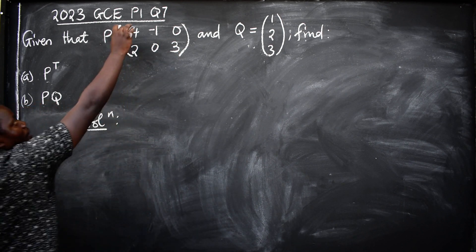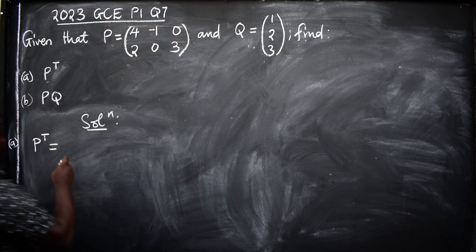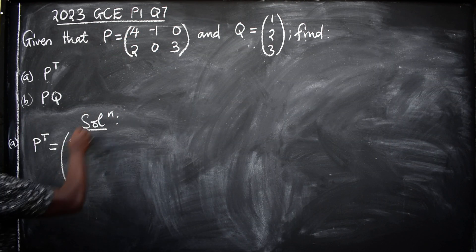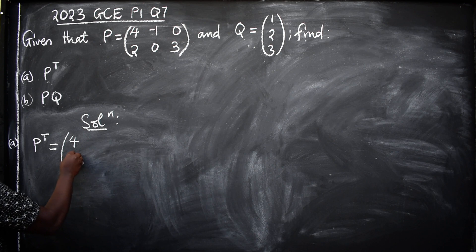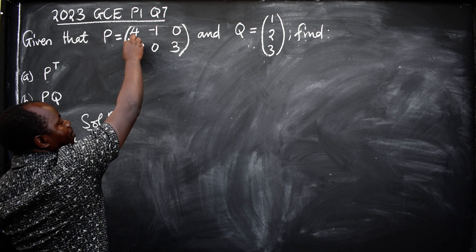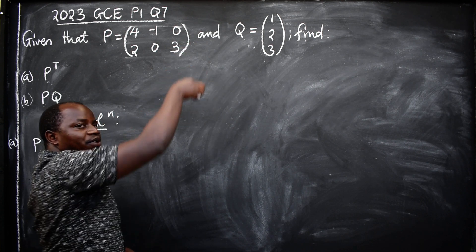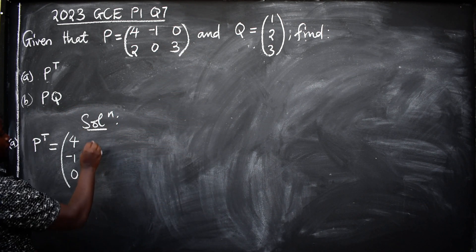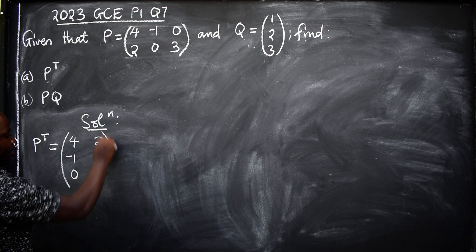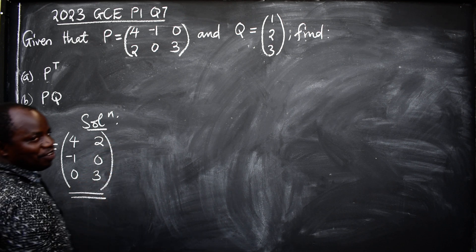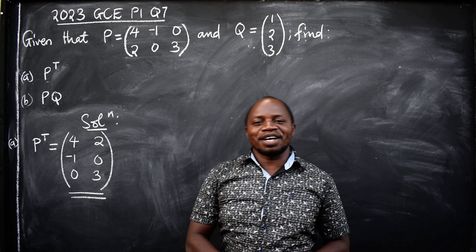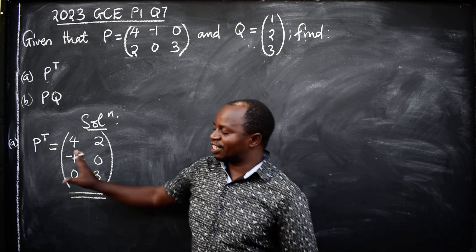So we are going to interchange. This first row will become first column. So our first row will now be the first column: 4, -1, 0. And then our second row will become second column: 2, 0, 3. Like this, you have transposed the matrix just like that.